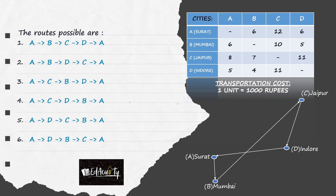The costs corresponding to each path, which are given in the table, will be added up together, and in this way we get the total costs incurred in a route. So the cost corresponding to the first route is Rs 32,000.